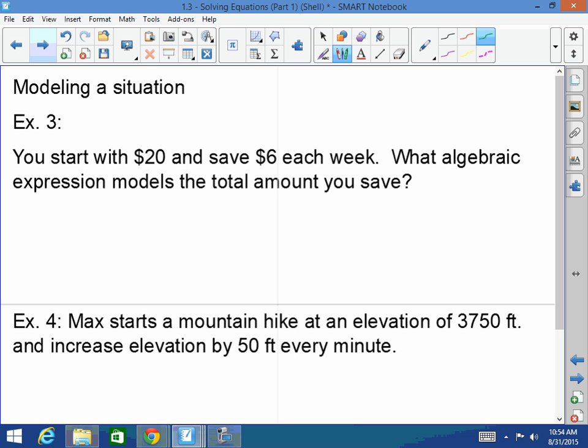You start with $20 and save $6 each week. What algebraic expression models the total amount you save? This is where labeling comes in. What's the unknown here? The amount of weeks. Great, so I would say W equals weeks right off the bat to help myself. Now what expression do I have here? I start with $20 and I save $6 per week, which is a W. How would I do that? $20 plus $6W. Very good. Try to remember from years past, whenever you have a number right next to a variable and there's no plus or minus sign in between it, that means that they're being multiplied.